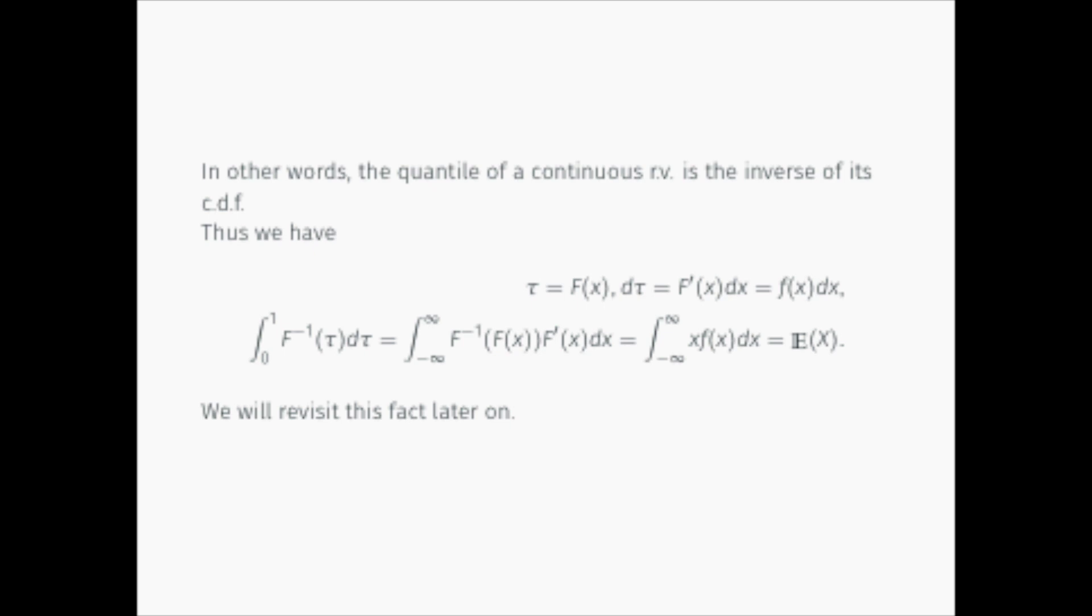A resulting property is that if we integrate the quantile function from 0 to 1, using change of variable formula, we can eventually derive that this equals to the expectation of the random variable X. We will revisit it later on when talking about the inference of IQN.